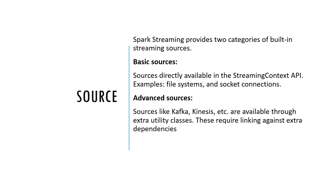Source means from where we can consume the streaming data. In Spark Streaming there are two categories of built-in sources: basic and advanced. Basic sources are those directly available through the streaming context API — for example, file systems and socket connections. Advanced sources include Kafka and Kinesis, which are also supported by Spark Streaming. Essentially we can read data from all of these sources in near real time using Spark Streaming.